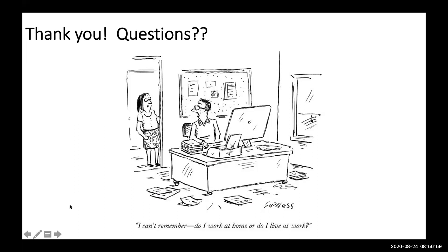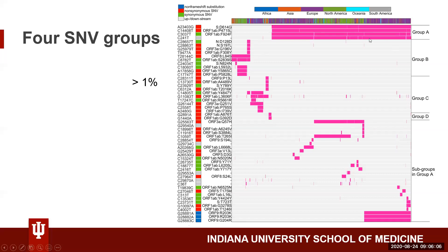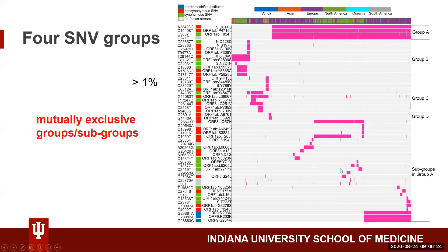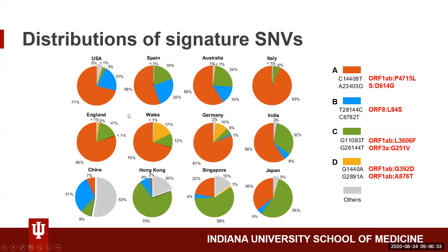Let's have a few quick questions. How is this correlated with the genetic diversity of SARS-CoV-2 virus? We defined four groups of SNFs here — group A, B, C, D — and we can see some subgroups within each. One point is these four groups show mutually exclusive distribution, and as we've already seen, different countries may have different groups of SNFs too.